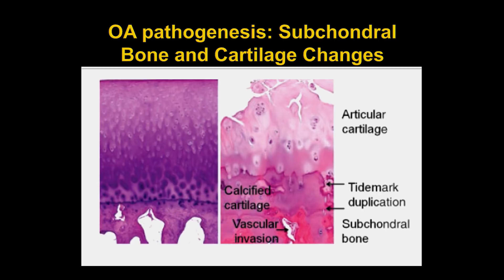A quick slide shows the changes happening in bone, especially subchondral bone. This histology slide shows normal cartilage on one side and macerated cartilage from an osteoarthritic knee on the other — you can see how broken up the articular cartilage is. Cartilage is avascular and relatively acellular and doesn't regenerate. Subchondral bone has a very important role in trying to buttress against the biomechanical forces that an osteoarthritic joint faces.